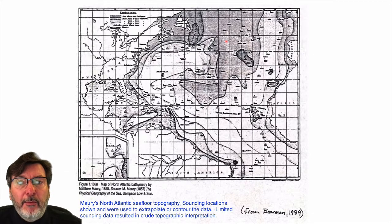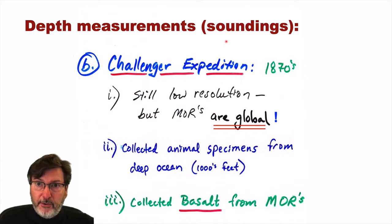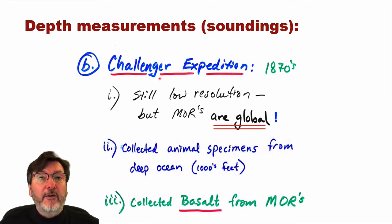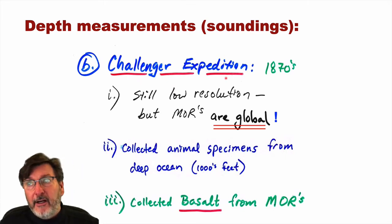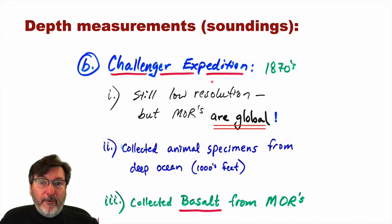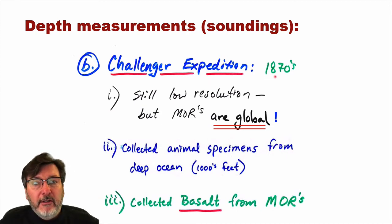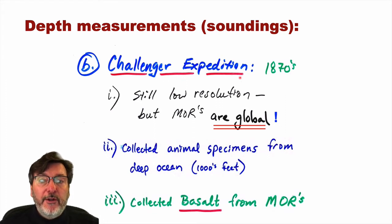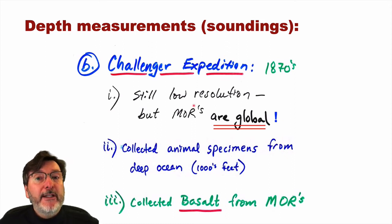The depth measurements or soundings improved with the Challenger expedition in the 1870s. It's a good lesson in data collection — they generated so much data about the global oceans, with depth measurements, temperatures, salinity, life, seafloor sediments, winds, and currents, that it took them 20 years to publish the results in the 1890s. It filled a massive bookcase and was rather unwieldy. What they did was show that there are mountain ranges essentially in every ocean basin, demonstrating that the mid-ocean ridge system is actually global.